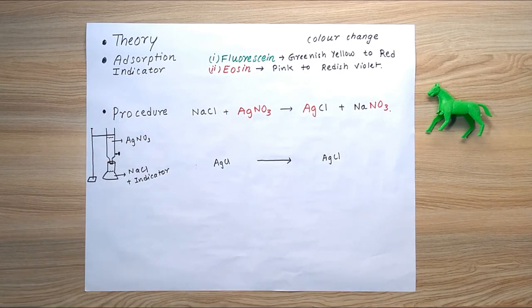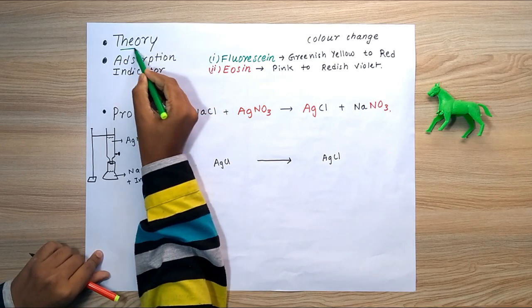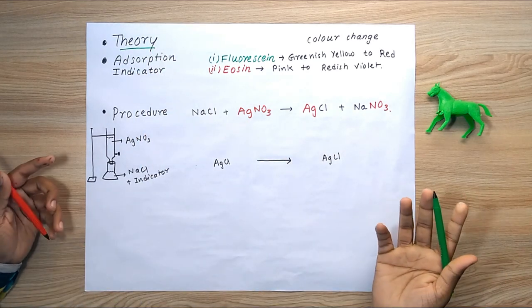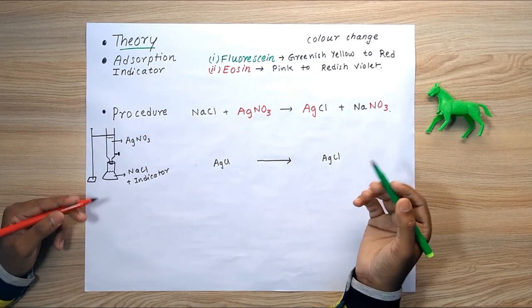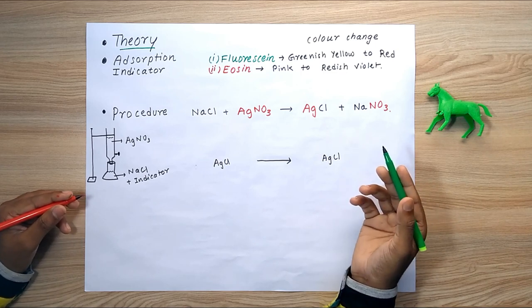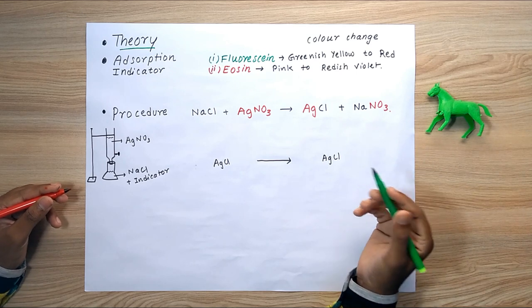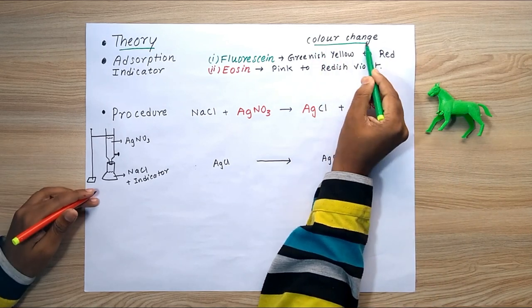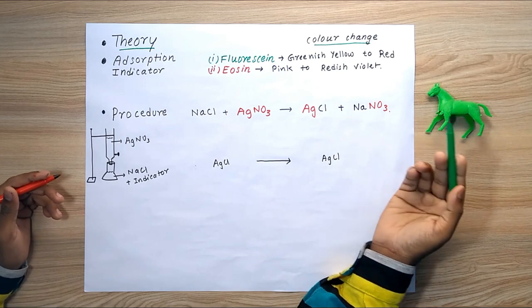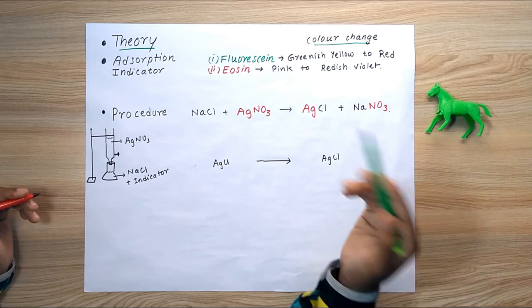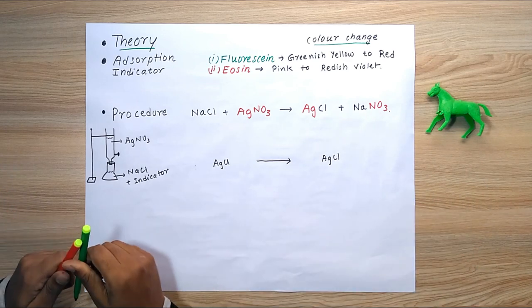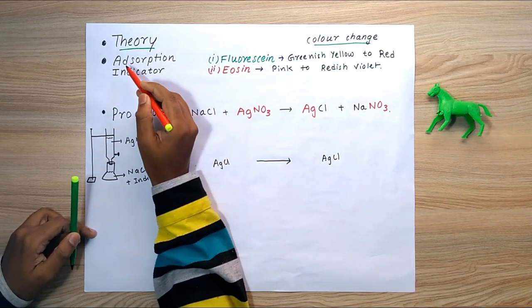Hello, today we're going to discuss Fajan's method, which comes under precipitation titration. The main theory tells us that it is based on the adsorption of an organic dye upon the precipitate formed during the titration. When adsorption of the organic dye occurs on the precipitate, a color change happens, and this color change determines the end point of titration.